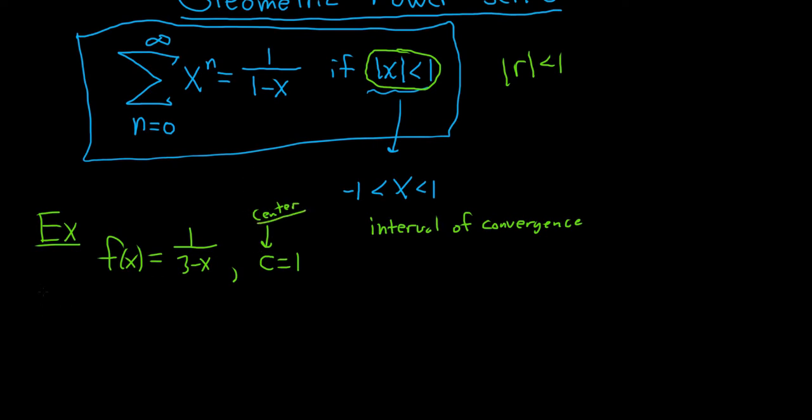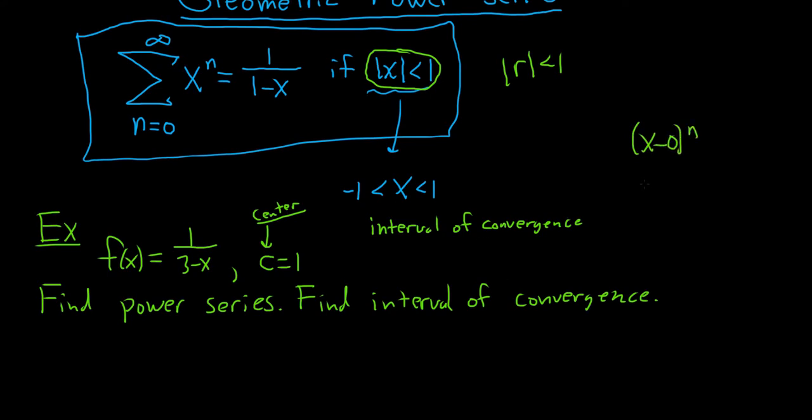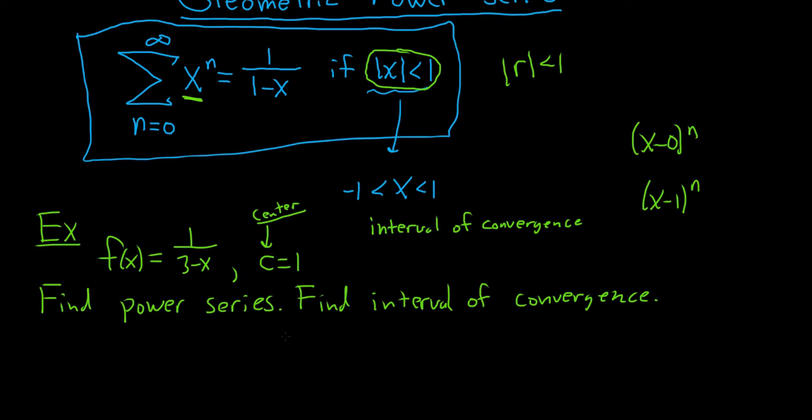And the question is to find a power series. So find power series. And we'll also find the interval. So find interval of convergence. So in the formula above, the c is 0 because it looks like this: x minus 0 to the n. So we want c to be equal to 1. So we want x minus 1 to the n. So this x here needs to be x minus 1. Let's go ahead and go through it very carefully.